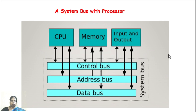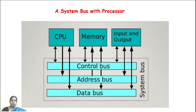The next slide shows a system with a processor. Here CPU, memory, input and output devices are connected through the address bus, data bus, and control bus. These buses are called the system bus. The bus is a set of wires that hold electrical signals, which may be described in terms of voltage levels or current levels.